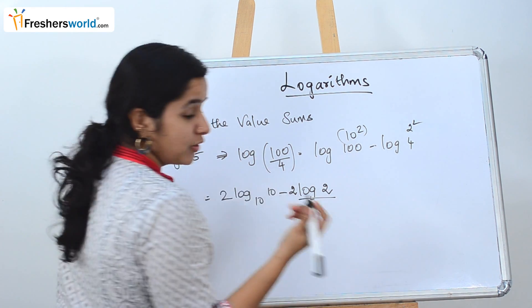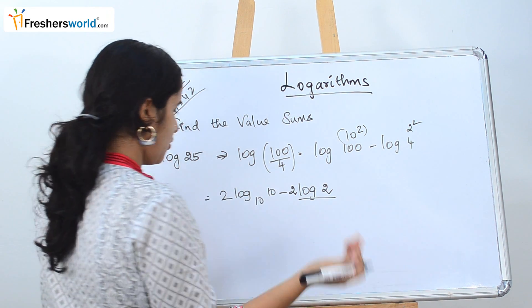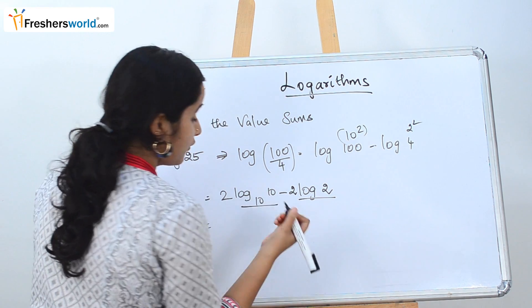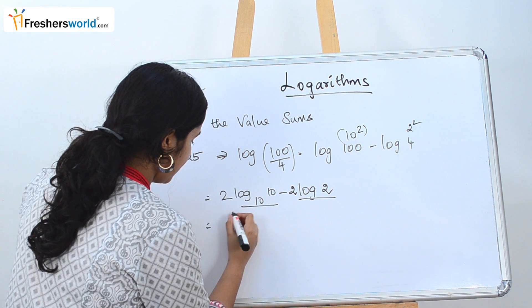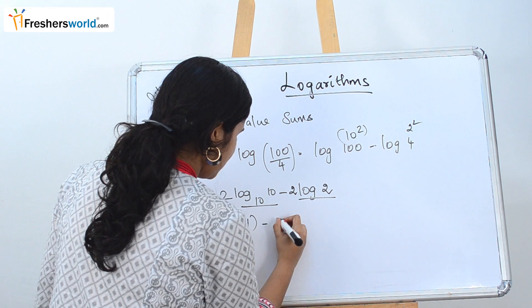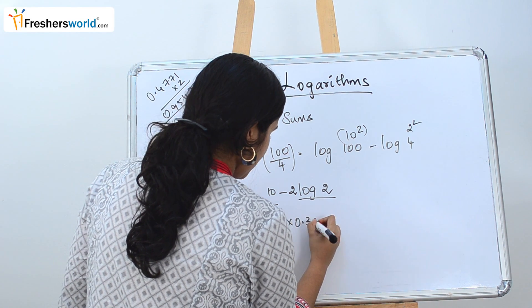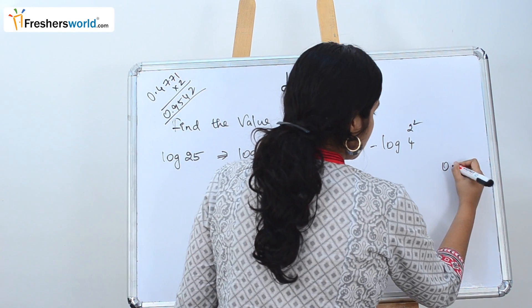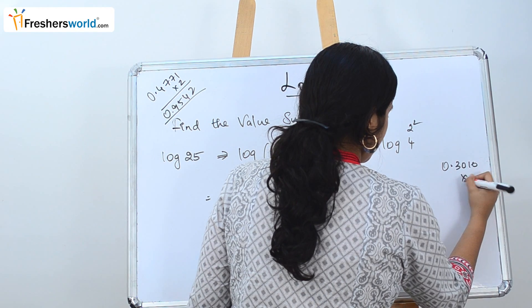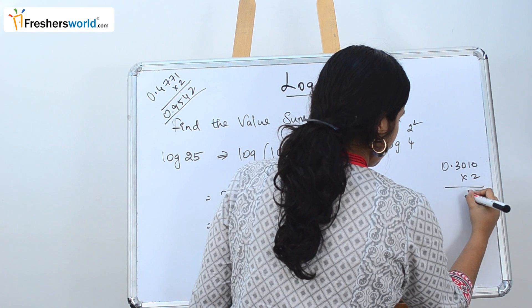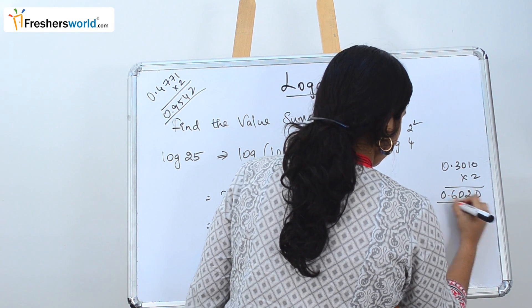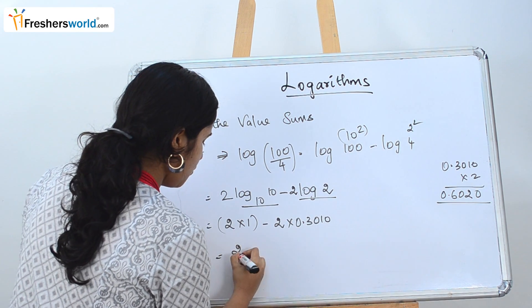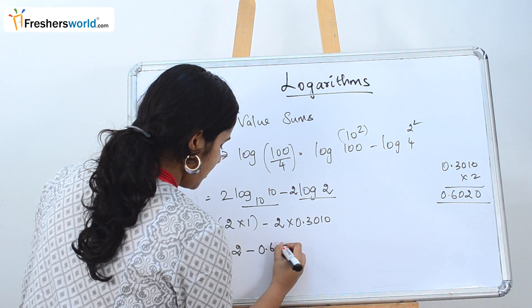We know the value of log 2 is 0.3010, and the value of log 10 to the base 10 is 1. So 2 into 1 minus 2 into 0.3010. So 0.3010 into 2 is 0.6020, which is nothing but 2 minus 0.6020.